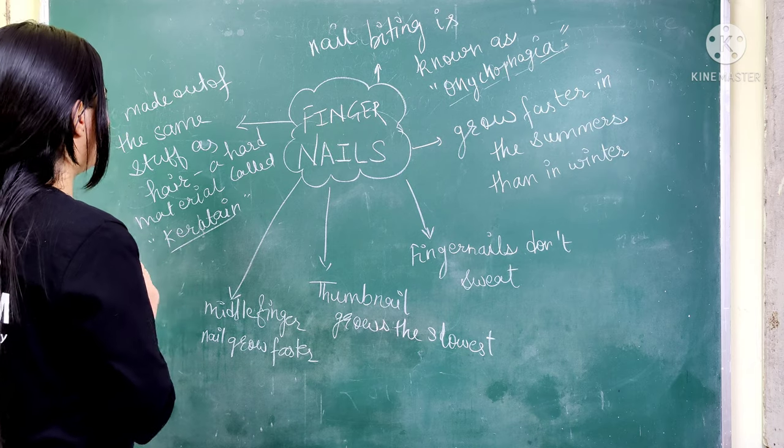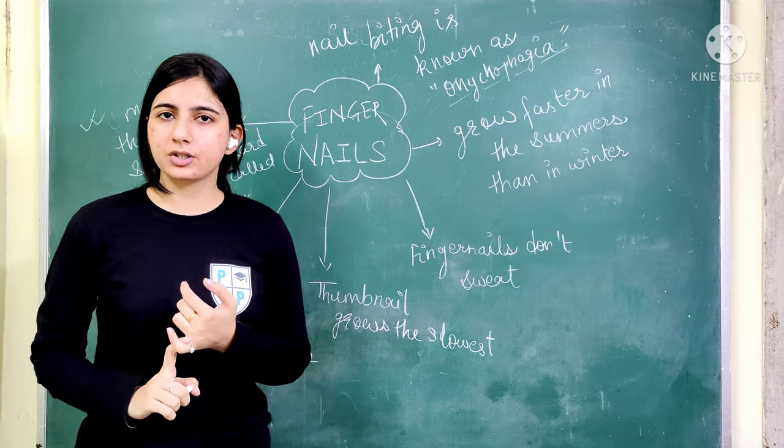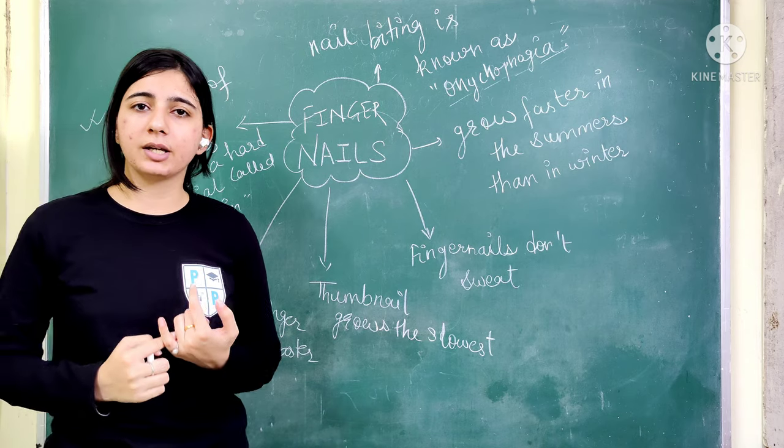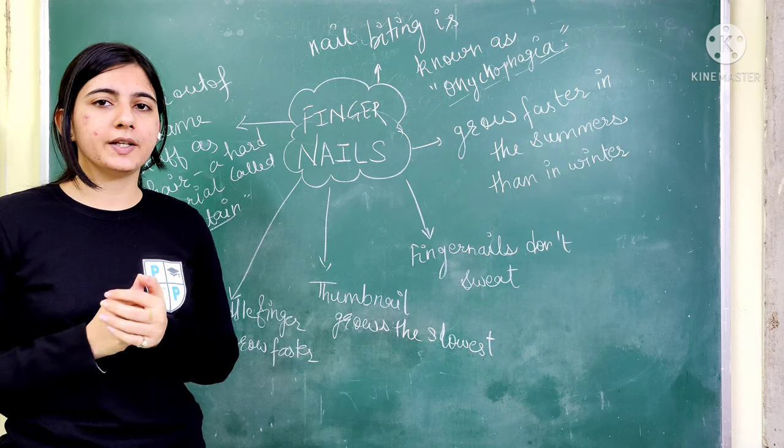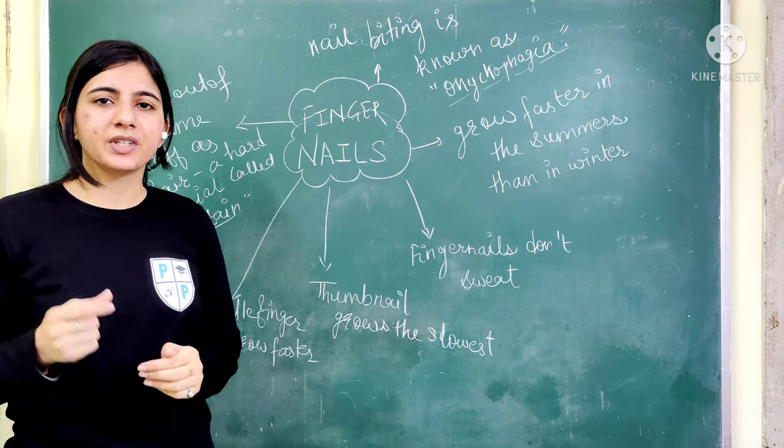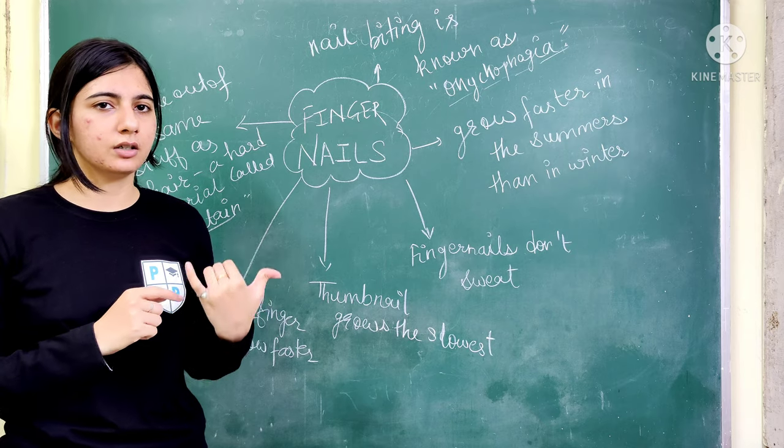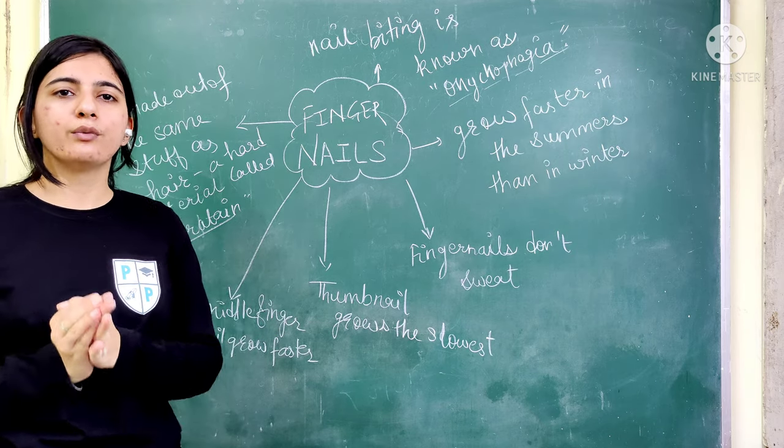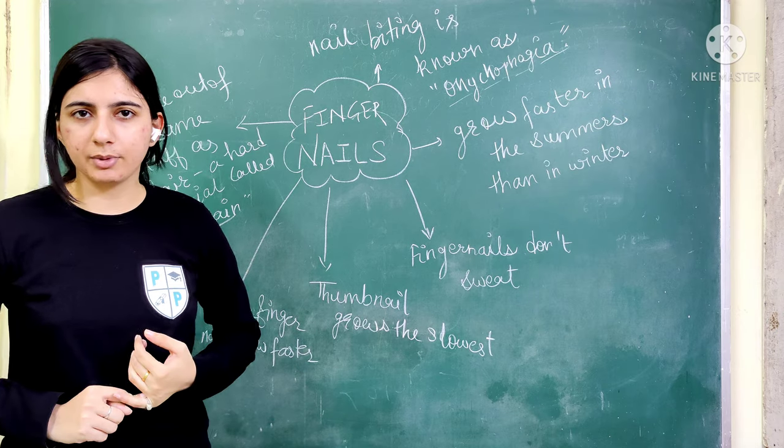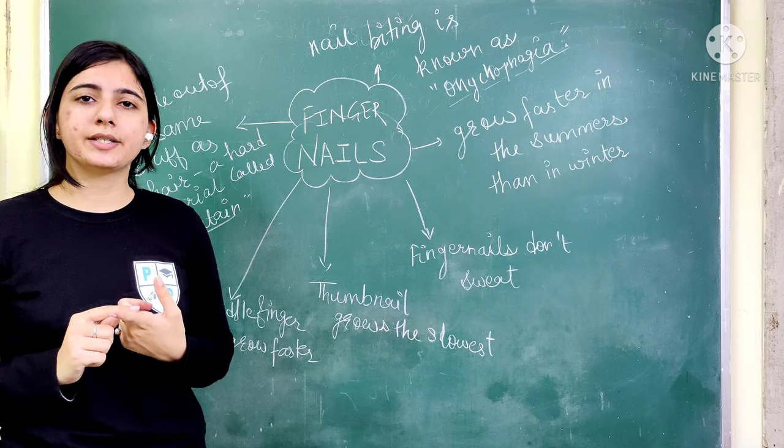Now the important point is that our hair, which is made from the same material as nails, and that material is called keratin. You may have heard of keratin treatment in hair. So fingernails and hair are made from keratin. What is keratin? It is a protein that is made from dead cells.